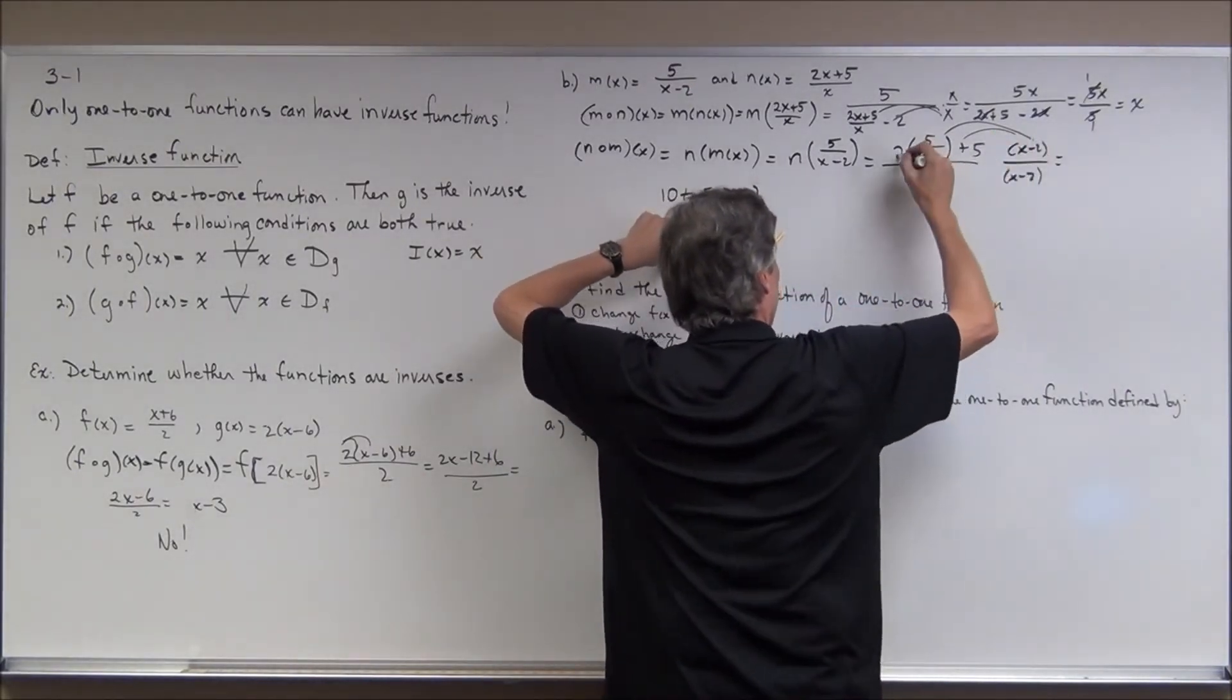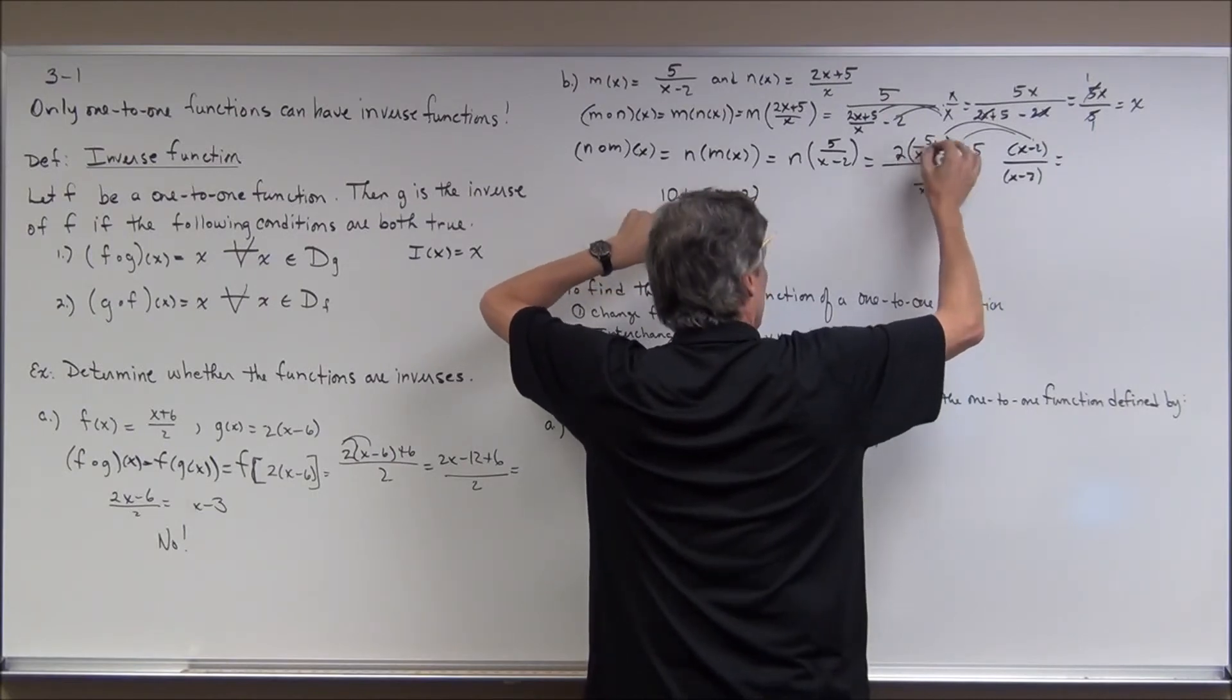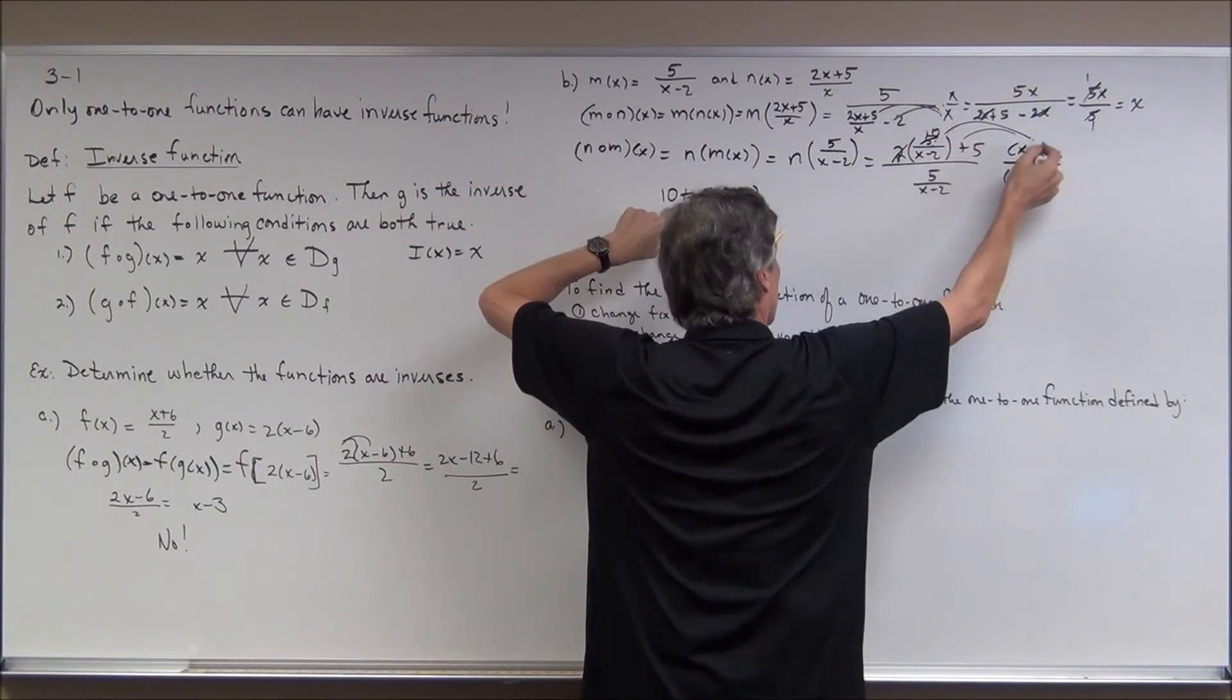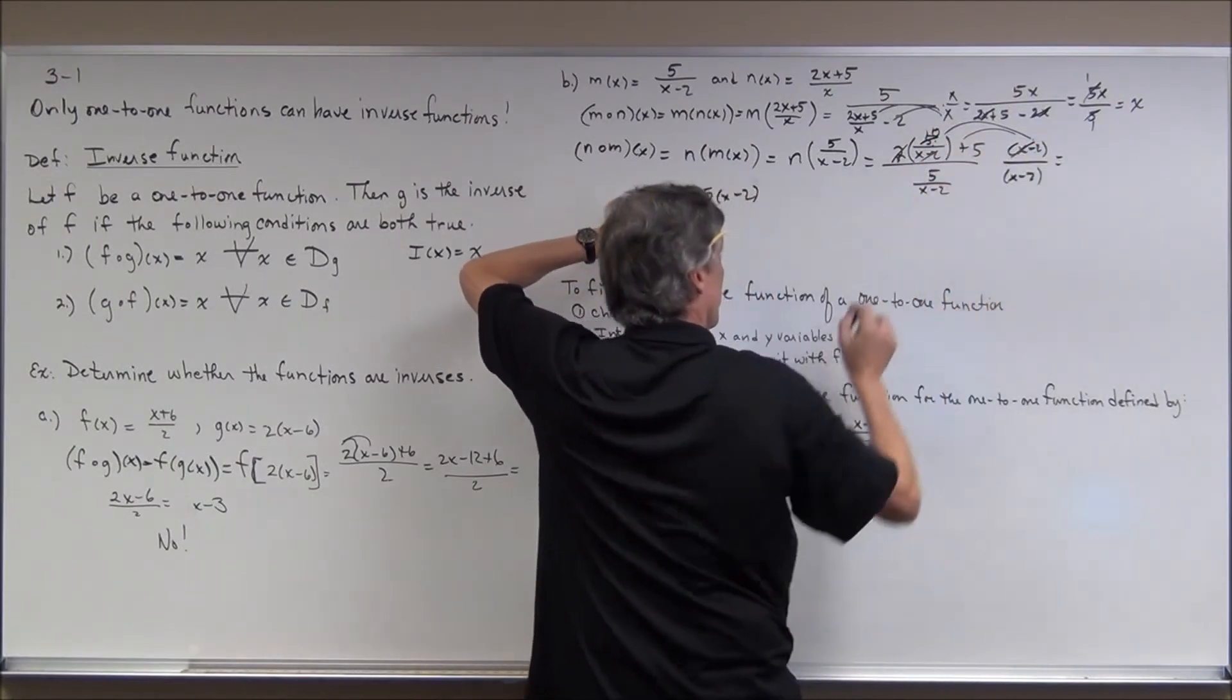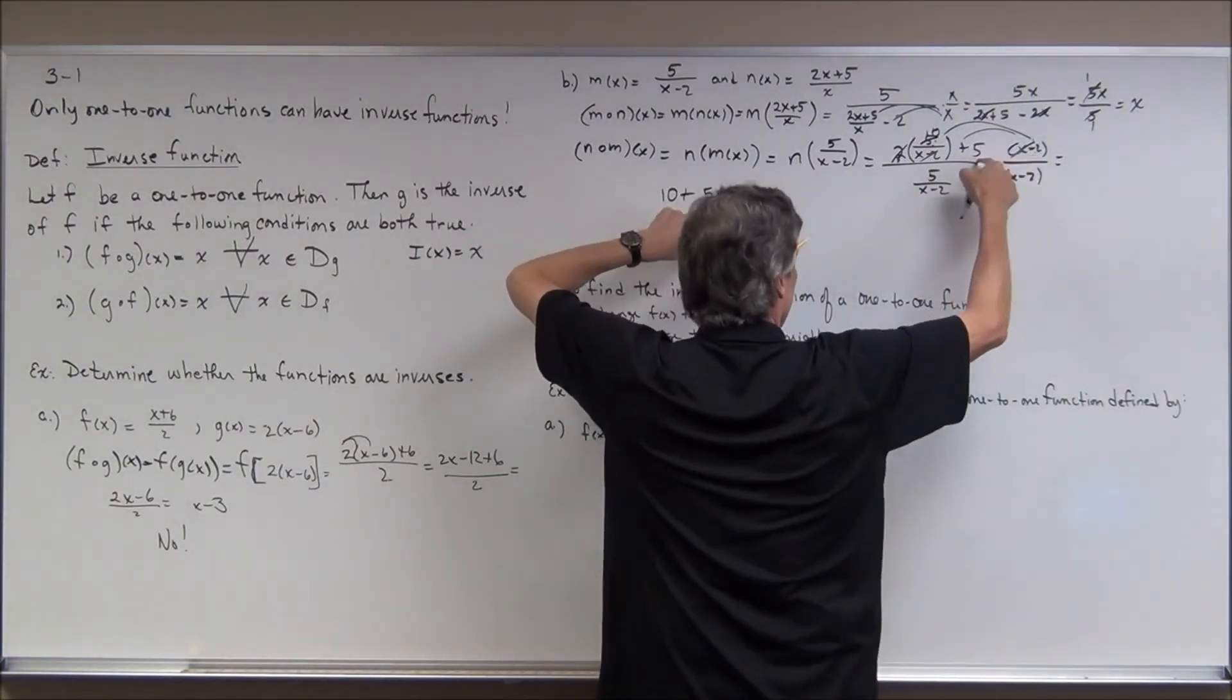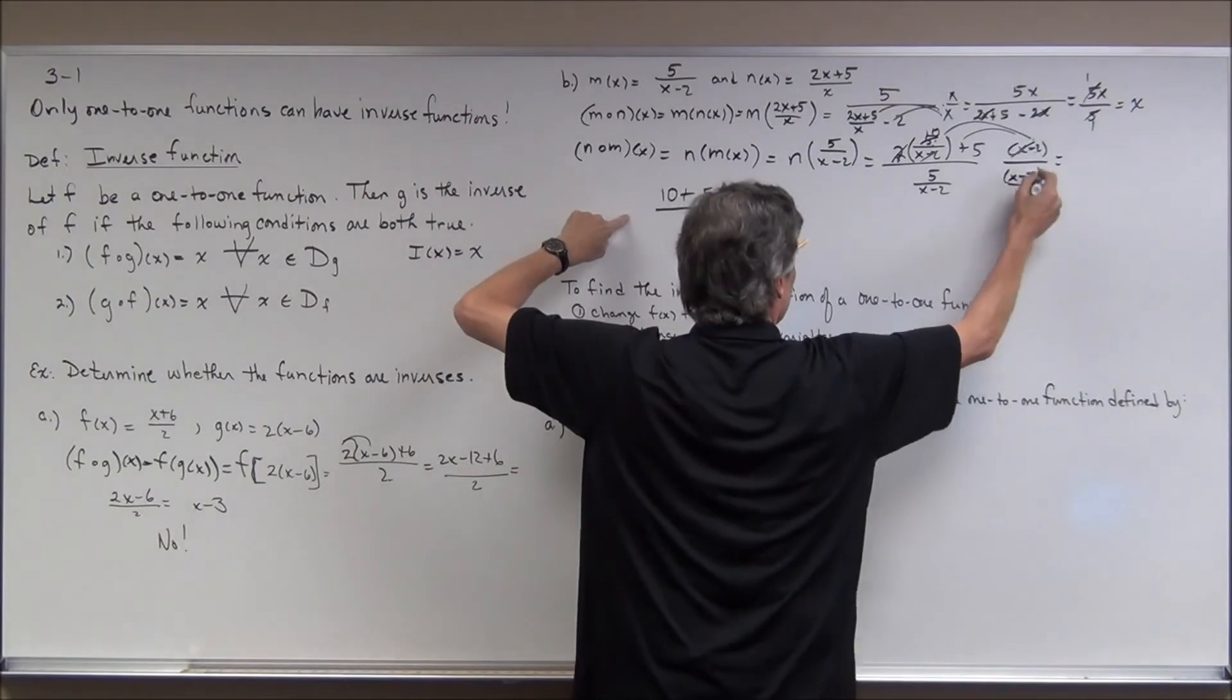All right, I've distributed. Okay, now again, 2 times 5 is 10. That's where this 10 is coming from right here. So we'll just put a 10 there. When you multiply by x minus 2, the x minus 2s cancel. That just leaves the 10 plus, and then x minus 2 times 5 is that, all over, down here, 5.